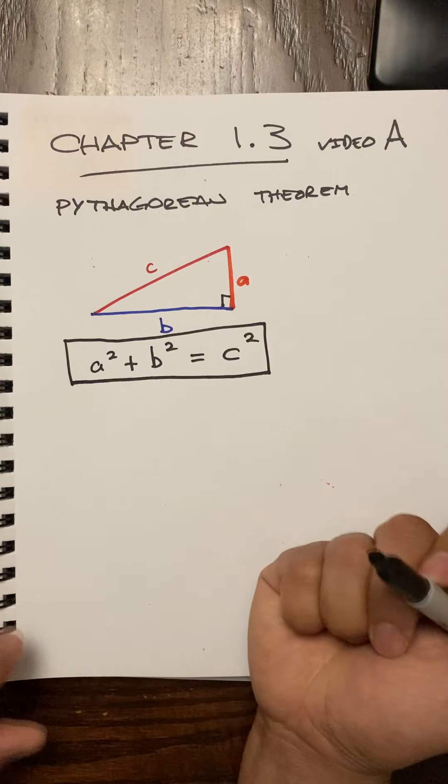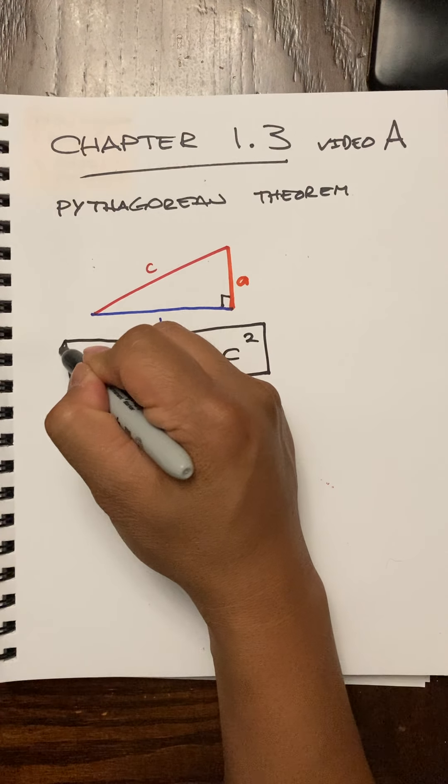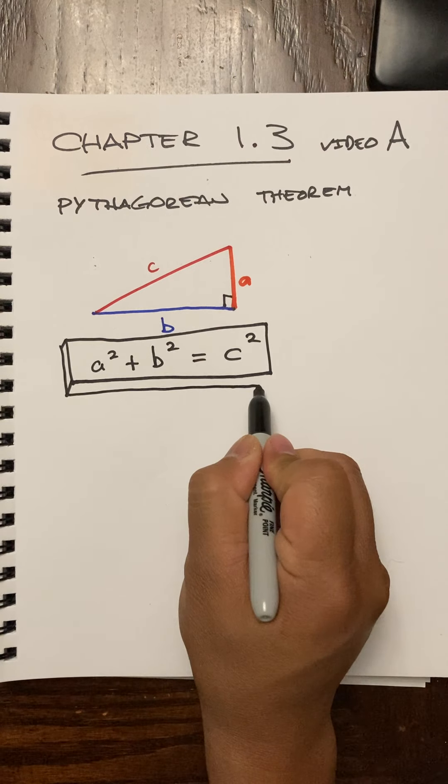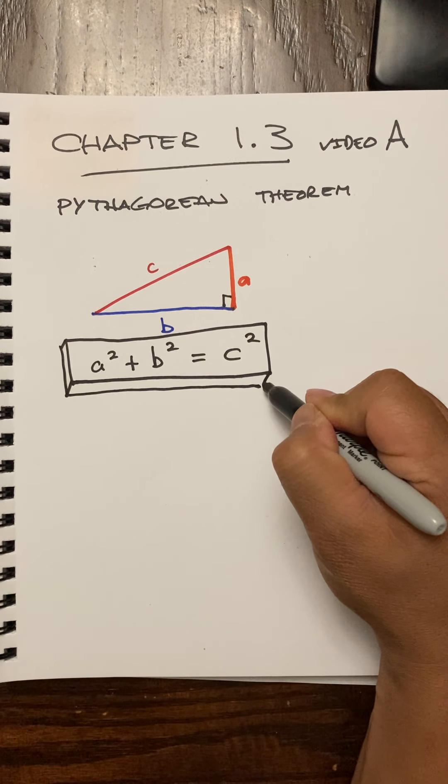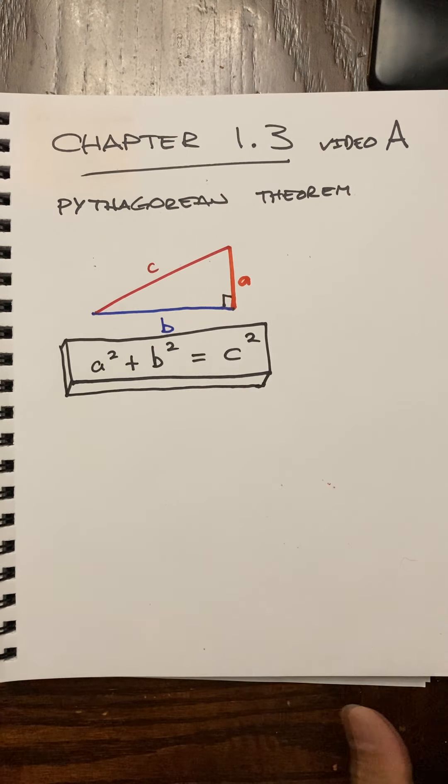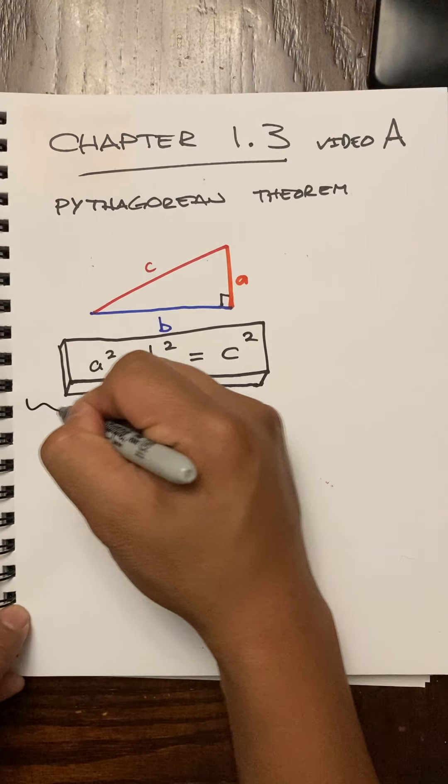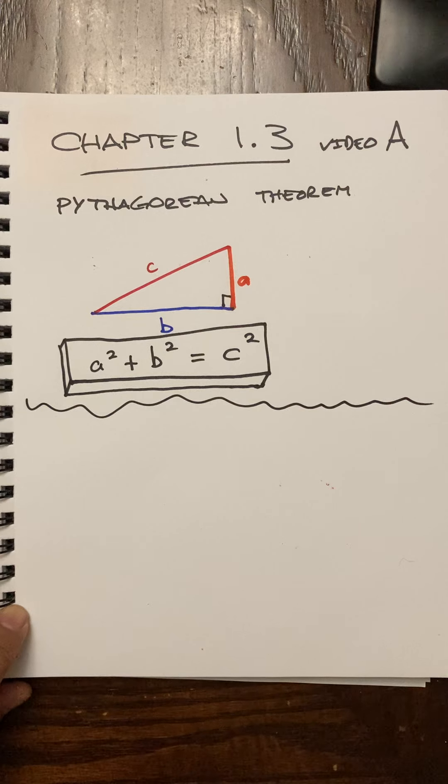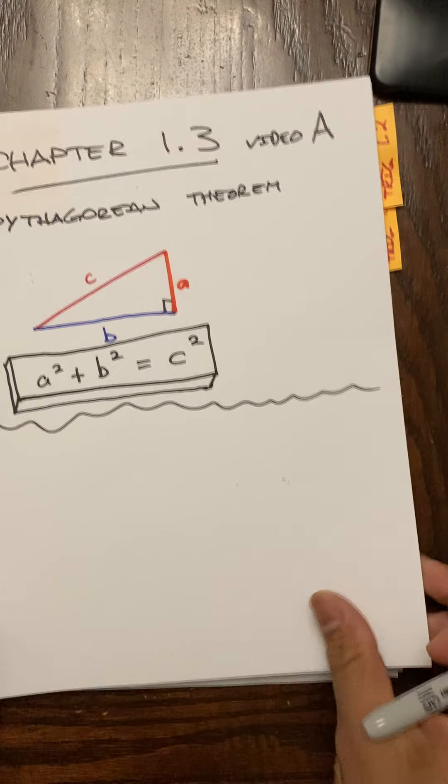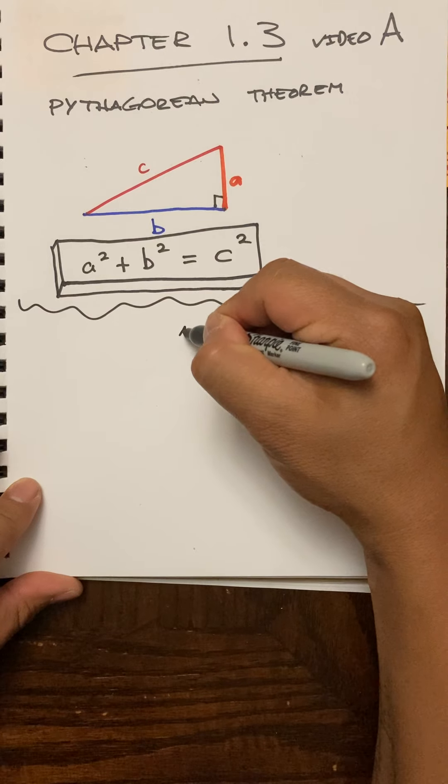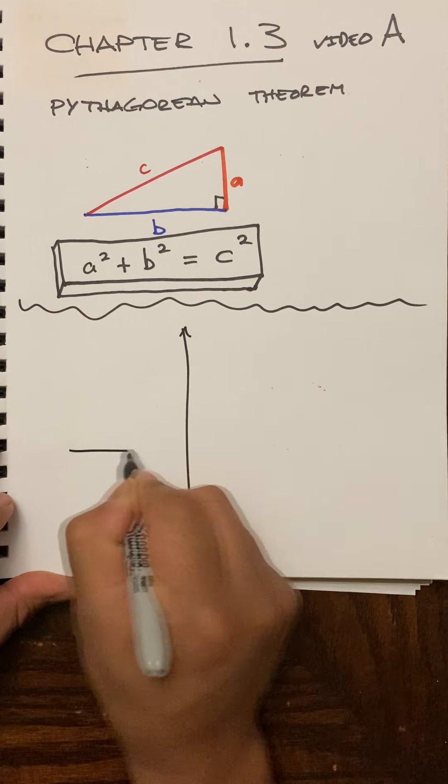That is hopefully old news to you. Okay, I'm going to use this formula now to find the distance between points that are on the Cartesian plane. So now instead of just the triangle in the middle of space, I'm going to put out two points in the middle of space.